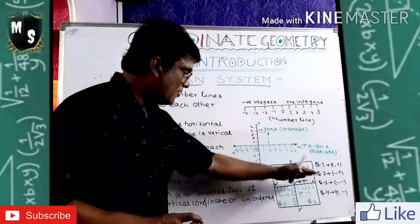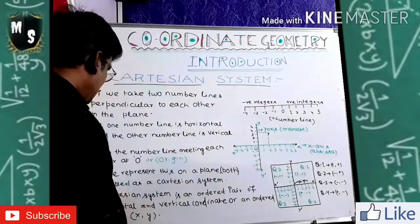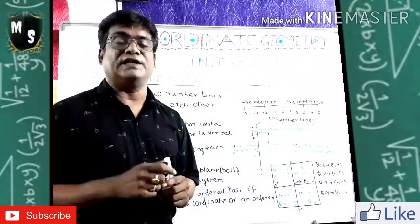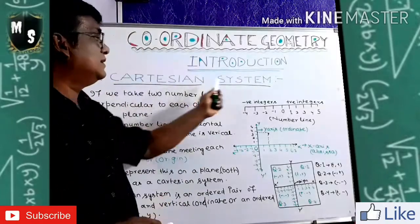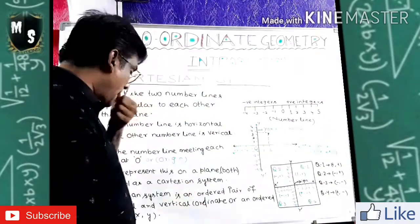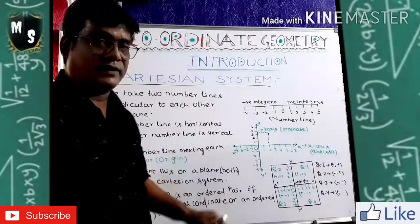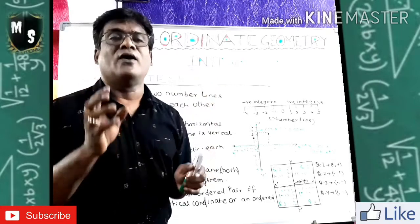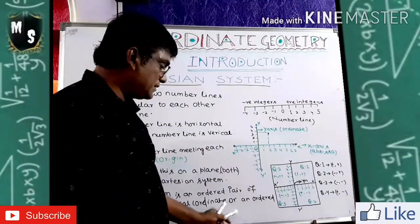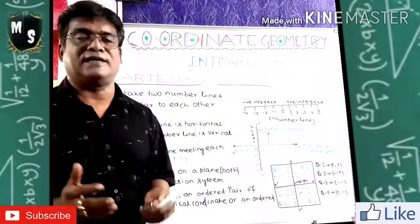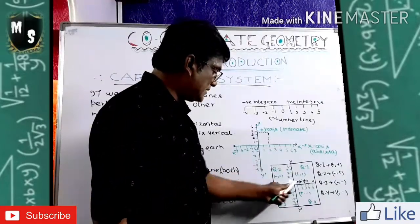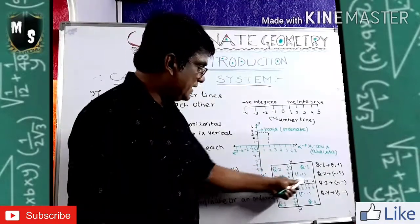When we determine the position of an object in a Cartesian plane, that is called a Cartesian system. A Cartesian plane gives us the exact location of a point. The Cartesian system is an ordered pair — a system of an ordered pair of the horizontal axis and the vertical axis, an ordered pair of X and Y. After putting the number lines into the Cartesian plane, the plane is divided into four parts.